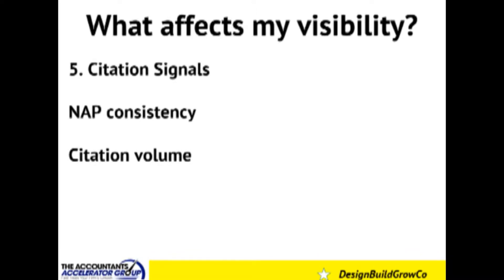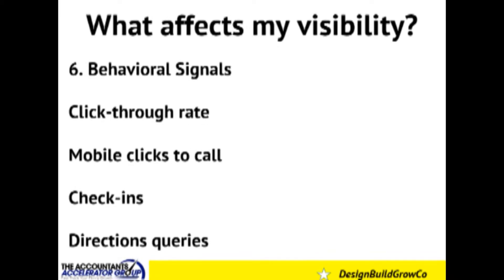Citation signals are somewhat technical but make a lot of sense: Google wants to see that your name, address, and phone number are consistent everywhere online, and that you're visible in as many places as possible. The next factor — becoming more and more prevalent — is behavioral signals: how many people click through when your business is shown as an option, how many people click on your Google My Business to call your business, make a booking, or place an order. How many people check in when they're actually at your premises — easy to encourage by offering free Wi-Fi. Also important is how easy it is for someone to get directions to your business using Apple Maps, Google Maps, or similar, and how often they use it.